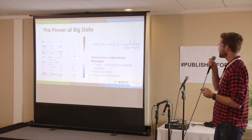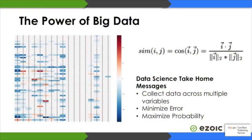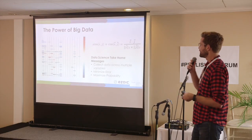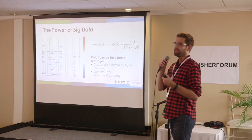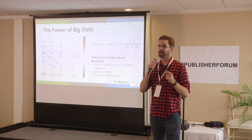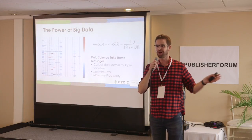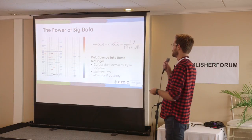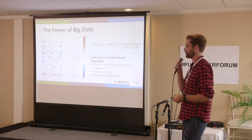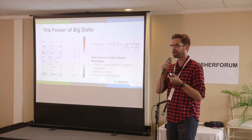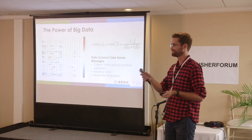To leave you with three things about data science and using data to your advantage: one, collect your data across as many variables as possible because you never know where the significance may be — the more data you collect, the more you will learn. Two, always work on minimizing your error and pay attention to it, because if you start paying attention to that one outlier — the dog on two legs — your data, algorithms, and predictions will all be skewed. And lastly, keep your eyes on the prize and always remember what you're trying to optimize for and what you want to get out of this. Thank you very much.